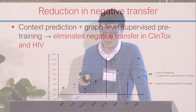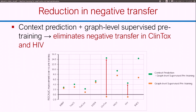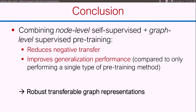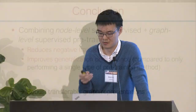Looking at individual performance on the eight downstream datasets, the orange dot shows naive graph-level pre-training, and we see two datasets where there's negative transfer. But if you combine node-level context prediction with graph-level supervised pre-training, you eliminate the negative transfer in those two examples. The conclusion is that if you want to pre-train graph neural networks for molecule property prediction, you should combine both a node-level and a graph-level pre-training approach to reduce negative transfer and improve generalization performance.